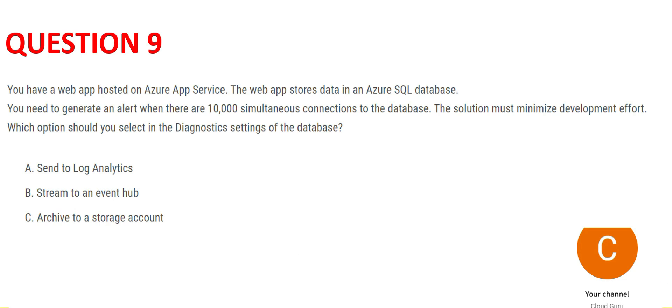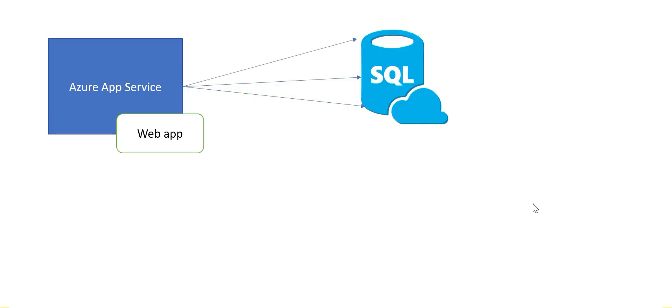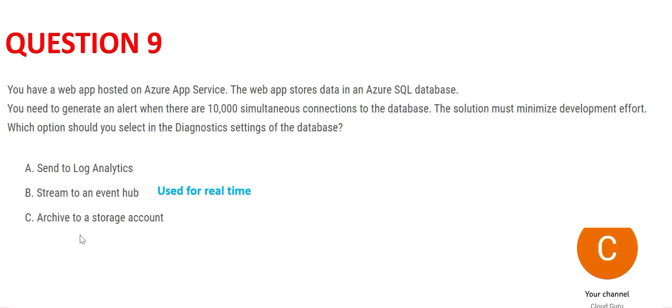'Stream to Event Hub' is for real-time based applications where you have to stream data further in real time. I have not seen usage of streaming from a database — we use Kafka and stream data is stored in a database, but streaming from a database I have not seen. Hence, option B is wrong for me.